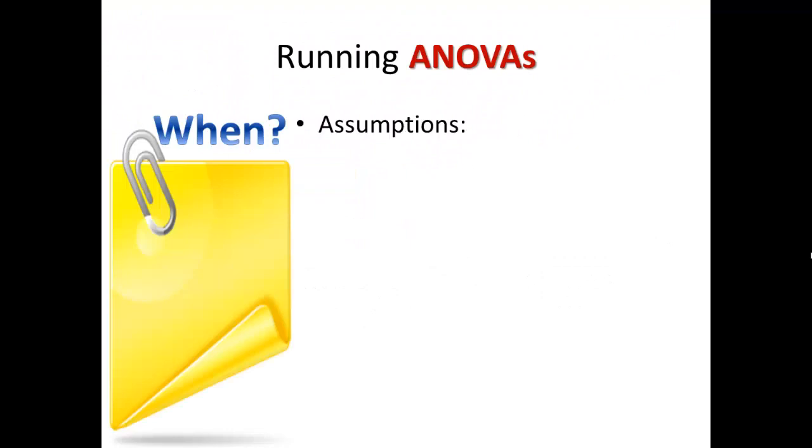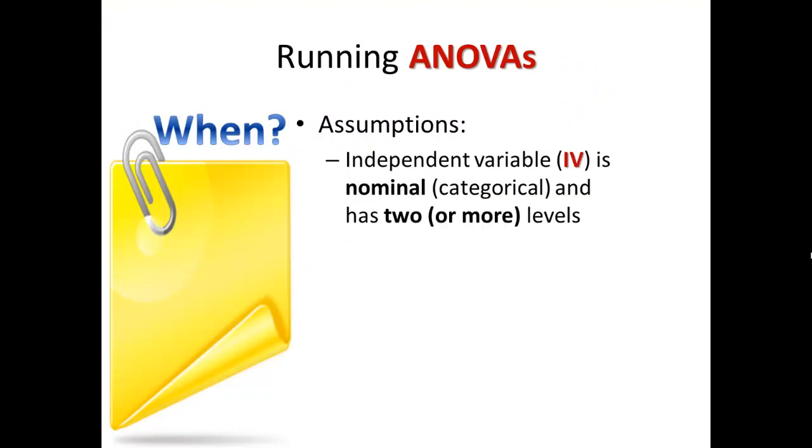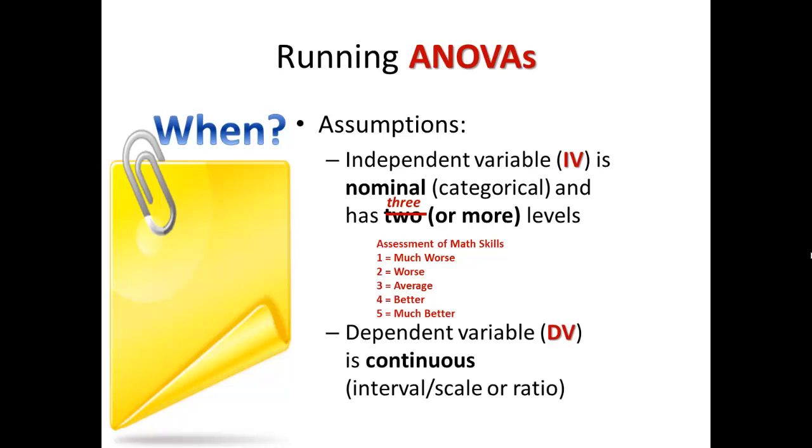When you're running ANOVAs, the assumptions are that you still have an independent variable that is gathering nominal or categorical data, only now it is not limited to only two levels. The better way to think about it is you're looking at an independent variable gathering categorical or nominal level data with three or more levels, such as assessment of math skills here, has five levels in it. It could just as easily be employment status: employed full-time, employed part-time, or not employed. Now the dependent variable, just as in the T-test, has to be continuous. You could run a mean on this one to determine what the concern for this course is on a 1 to 5 scale.